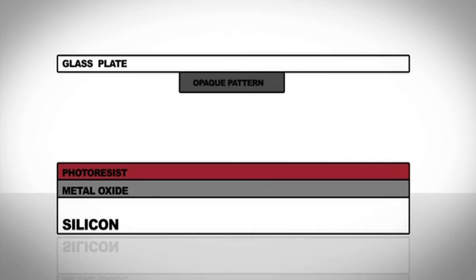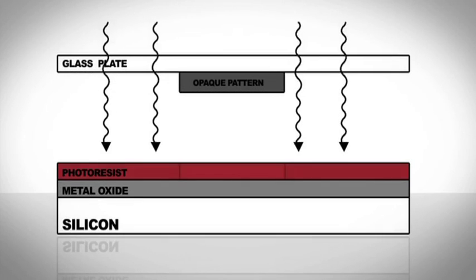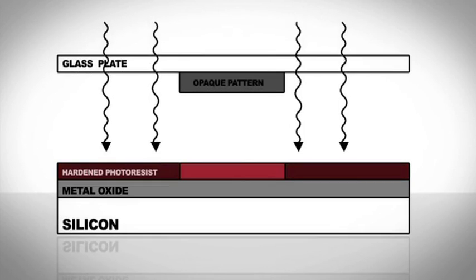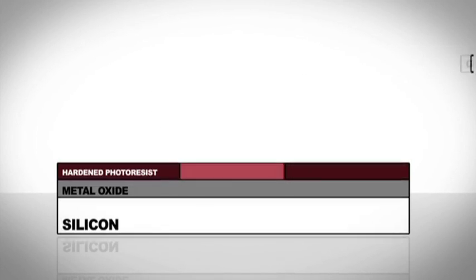Once the photoresist is spun onto the wafer and baked, a photomask similar to a stencil is prepared and a strong UV light hardens the resist in the areas unprotected by the mask. The unexposed soft photoresist is then removed with photoresist developer, leaving a pattern of bare and photoresist-coated oxide on the wafer surface.